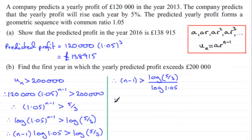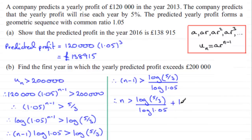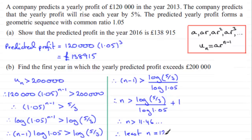Adding one to both sides, n is greater than log(5/3) ÷ log(1.05) + 1. Working this out gives n greater than 11.46 and so on. We want the least integer value of n, so the least value of n must be 12.